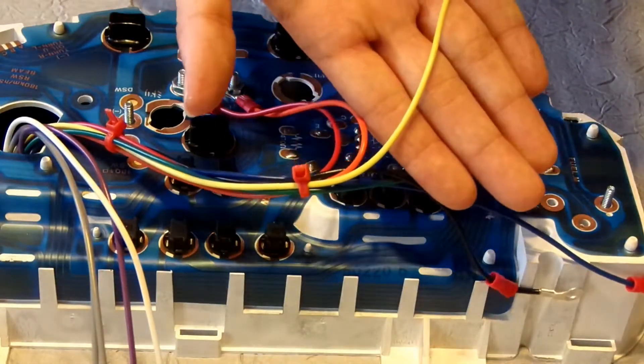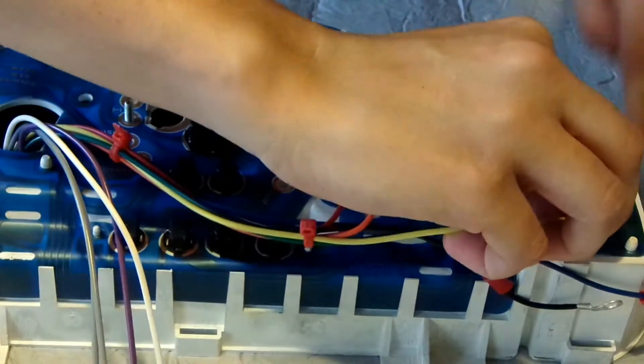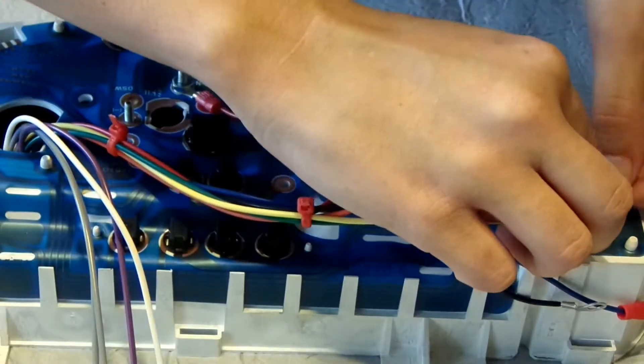The yellow wire is for the fuel gauge sending unit. Your pre-existing fuel gauge sending unit is fine and will not be replaced during the installation of the cluster.